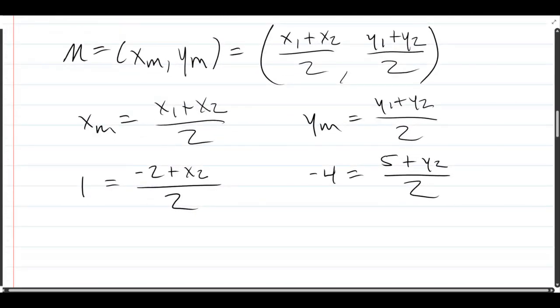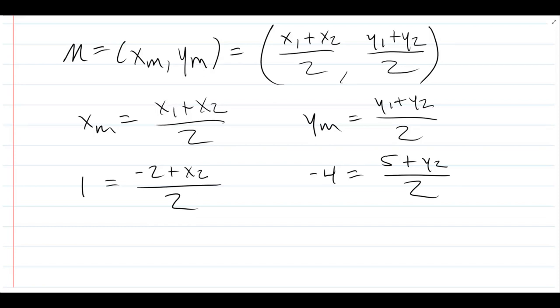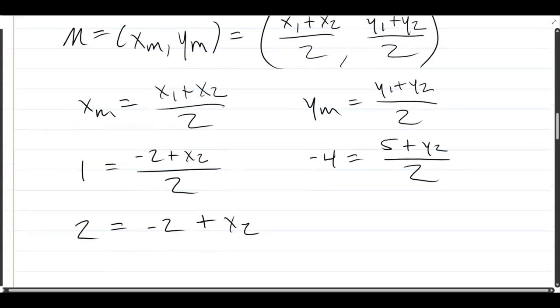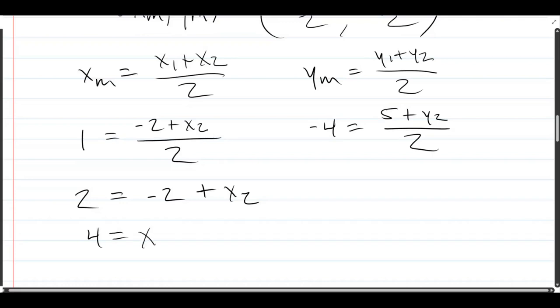These are just equations, linear equations. We'll multiply in the left equation, multiply by two. And that'll give us two times one is two. Cancel the denominator. And all we need to do now is add two to both sides. So we get four is X2.